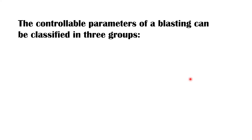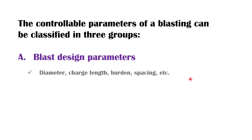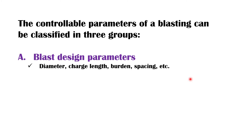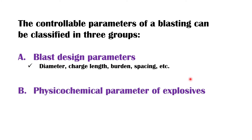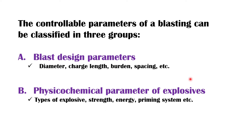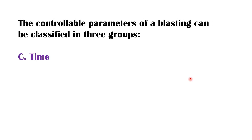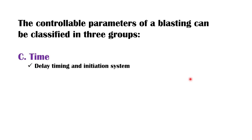The controllable parameters of a blasting can be classified in three groups. A: blasthole parameters, which includes diameter, charge length, burden, spacing, etc. B: physiochemical parameters of explosives, which includes type of explosive, strength, energy, priming system, and many other things. C: time, which includes delay timings and the initiation system.